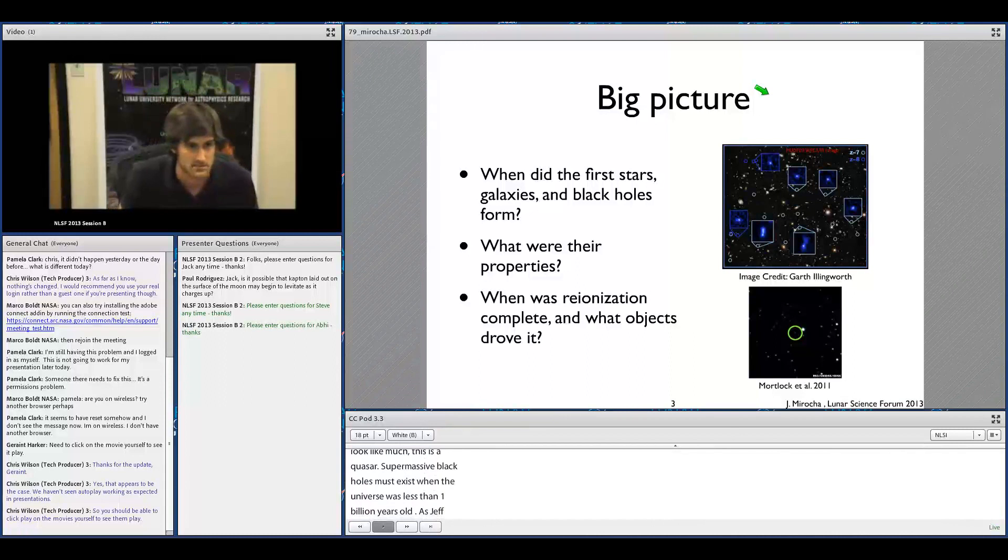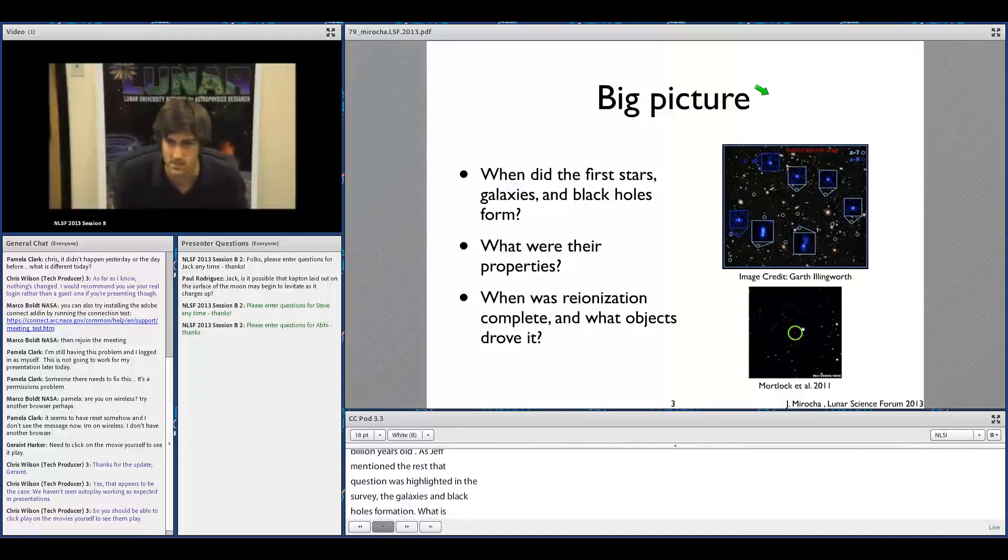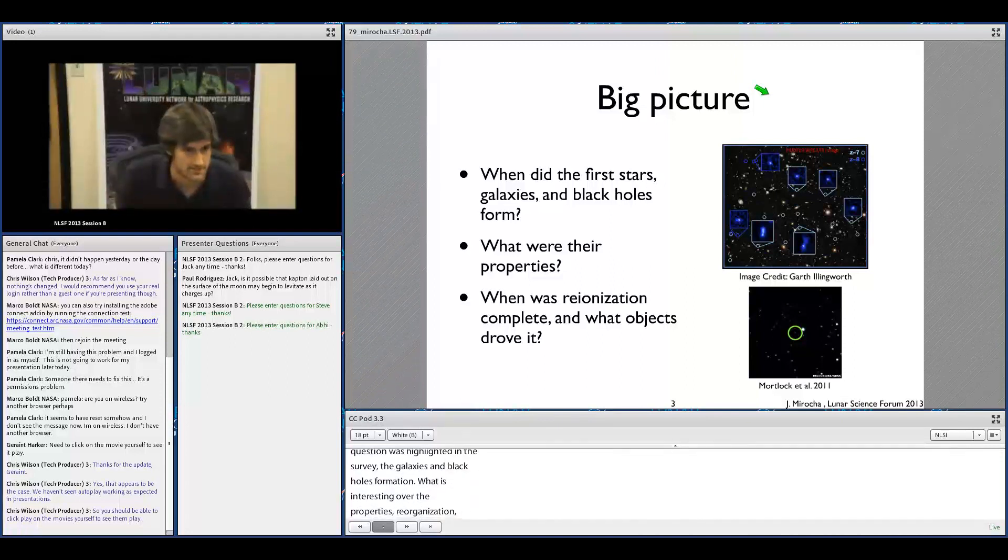When did the first stars, galaxies, and black holes form? More interestingly, what were their properties? And then reionization - when was it complete and what objects drove it?